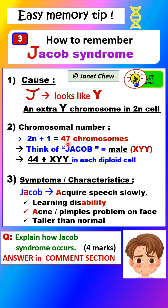In each cell there is an extra Y chromosome, which is a sex chromosome, so the chromosomal number becomes 2n + 1, which equals 47 chromosomes. The normal 2n number is 46 chromosomes in each cell of a human being, but there is one extra chromosome due to the presence of the extra Y chromosome. So there are 47 chromosomes in each cell in the Jacob Syndrome individual. Now, is the patient male or female?